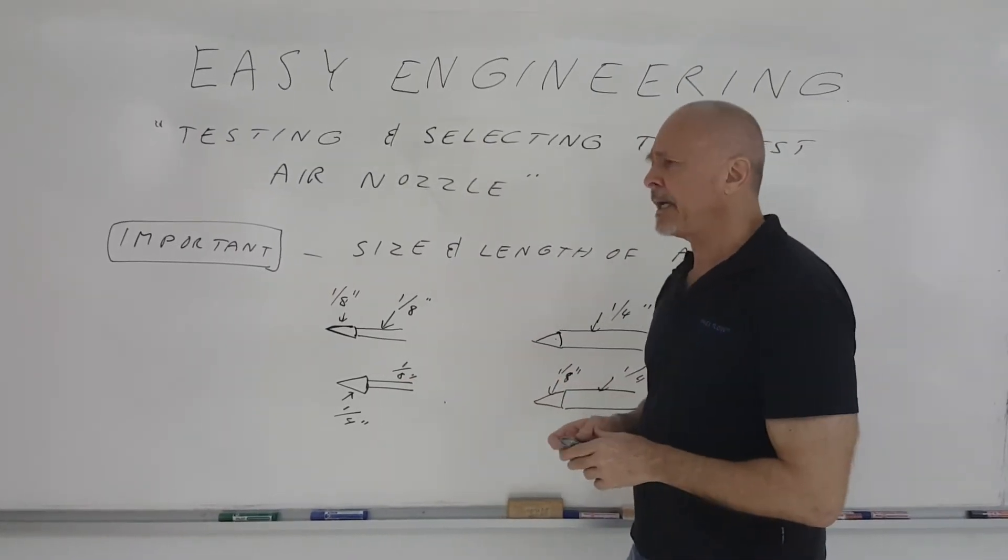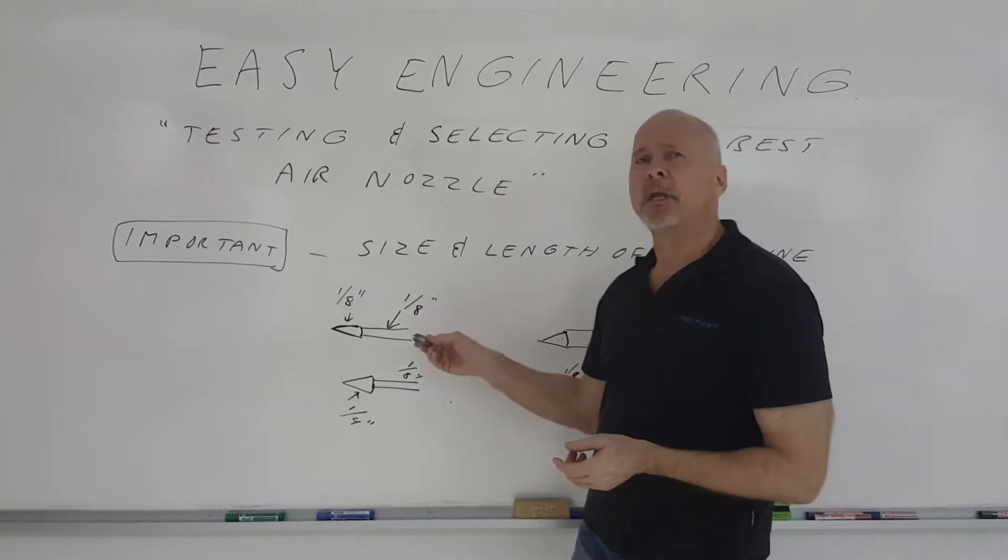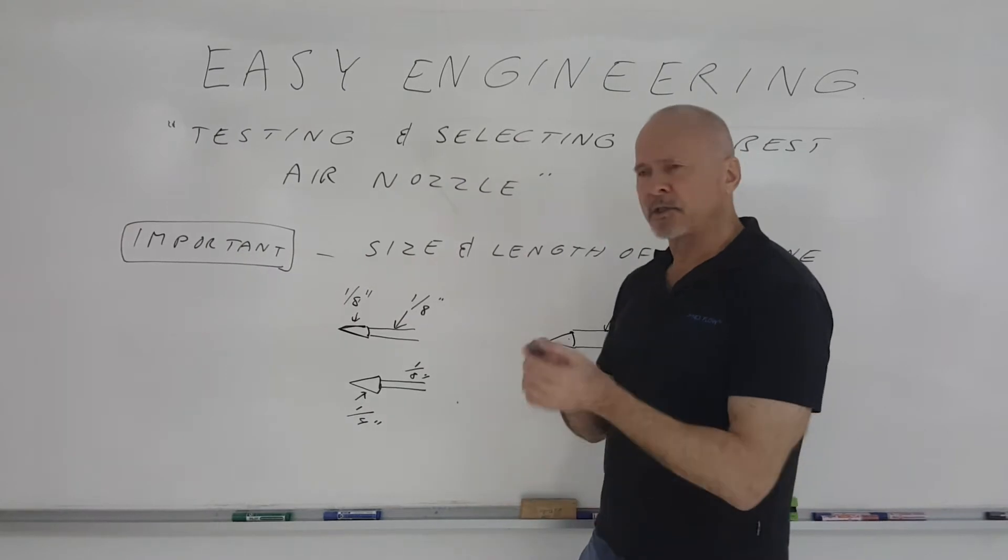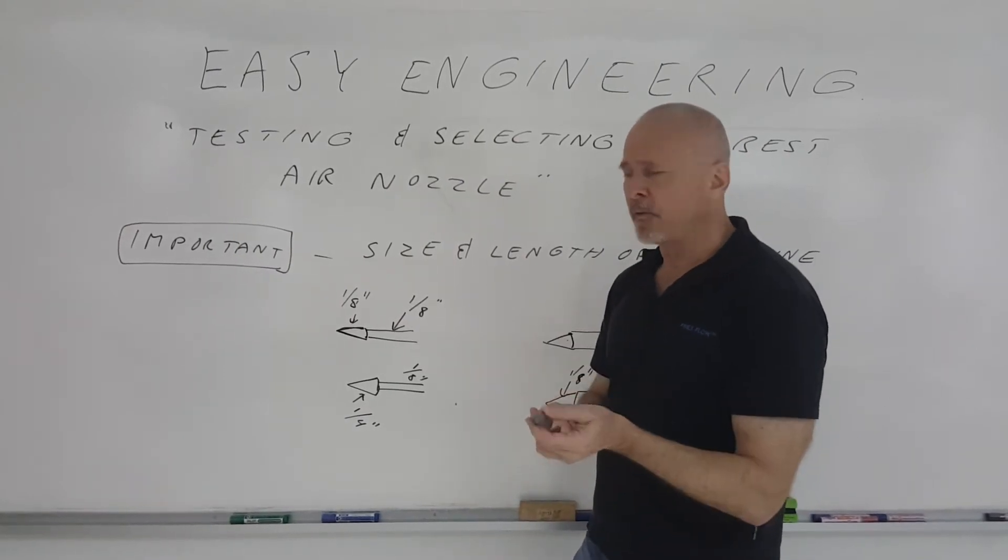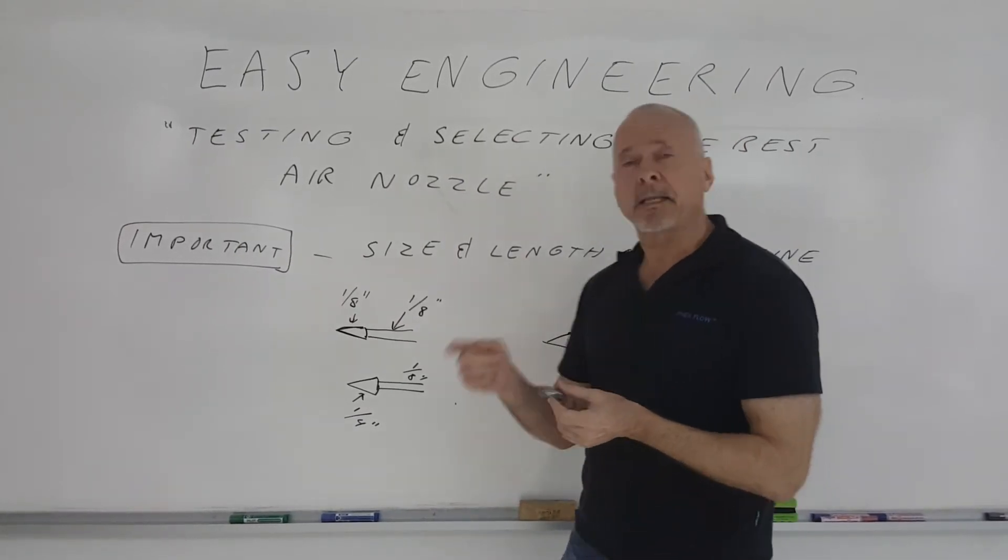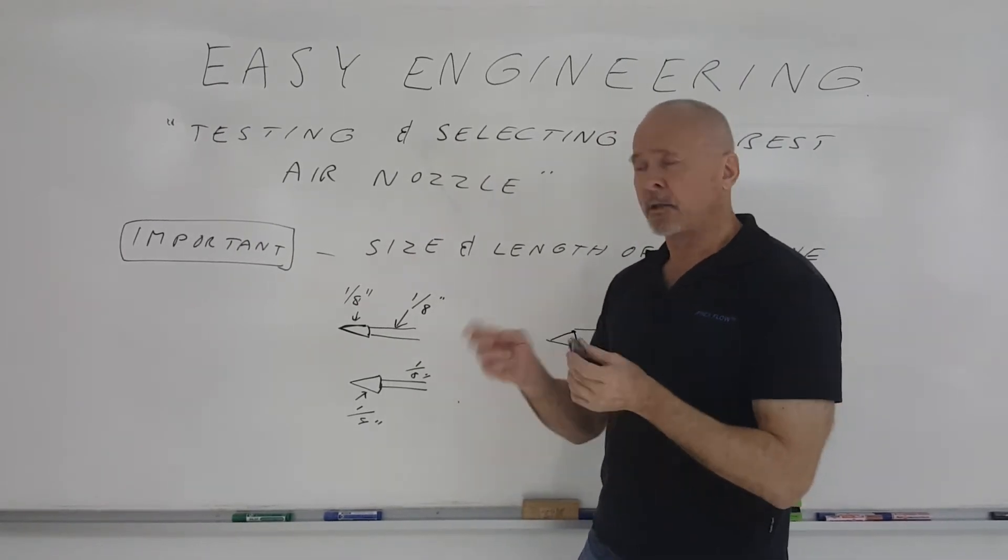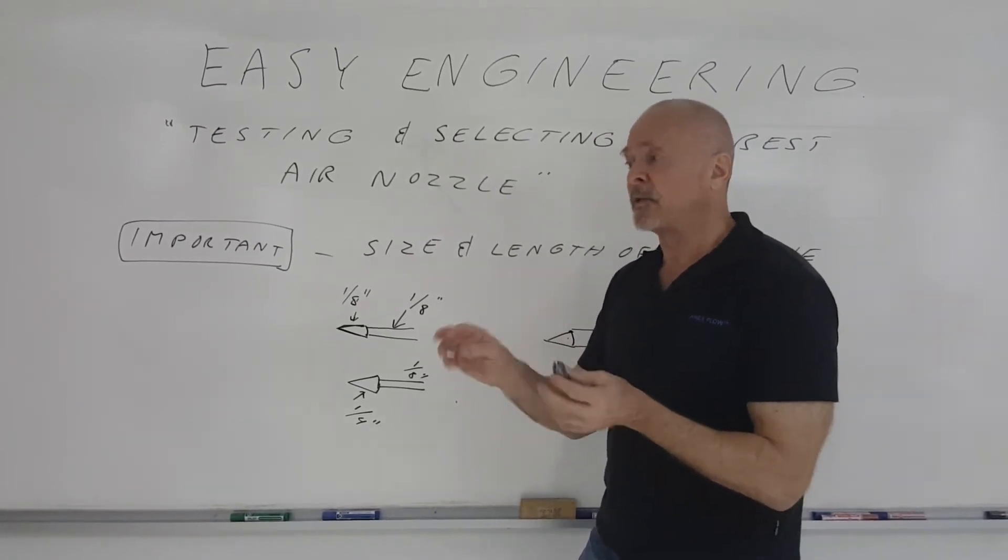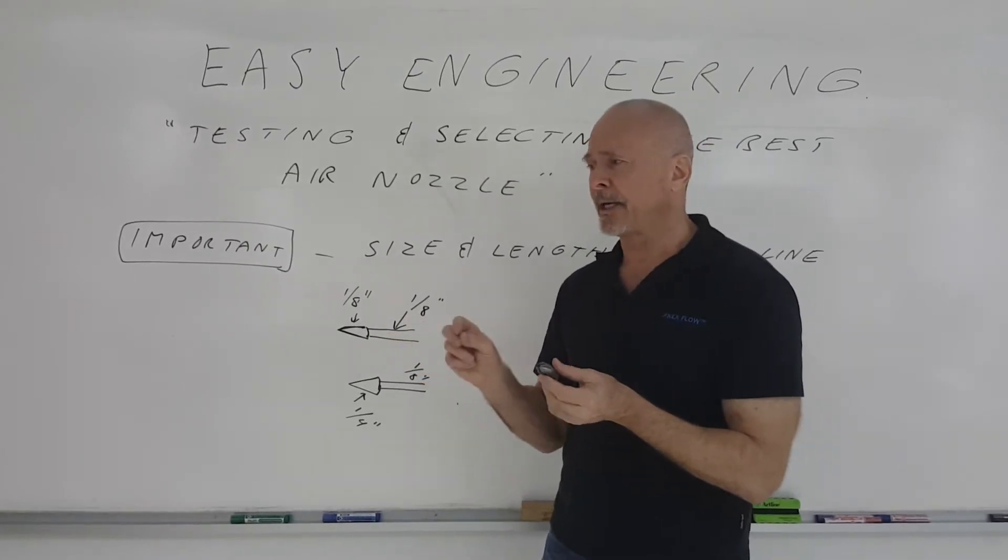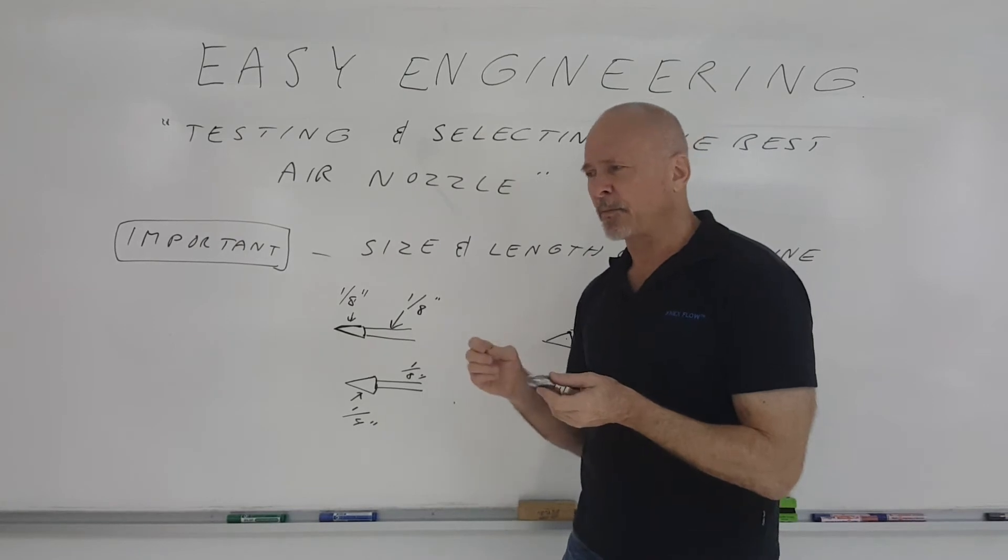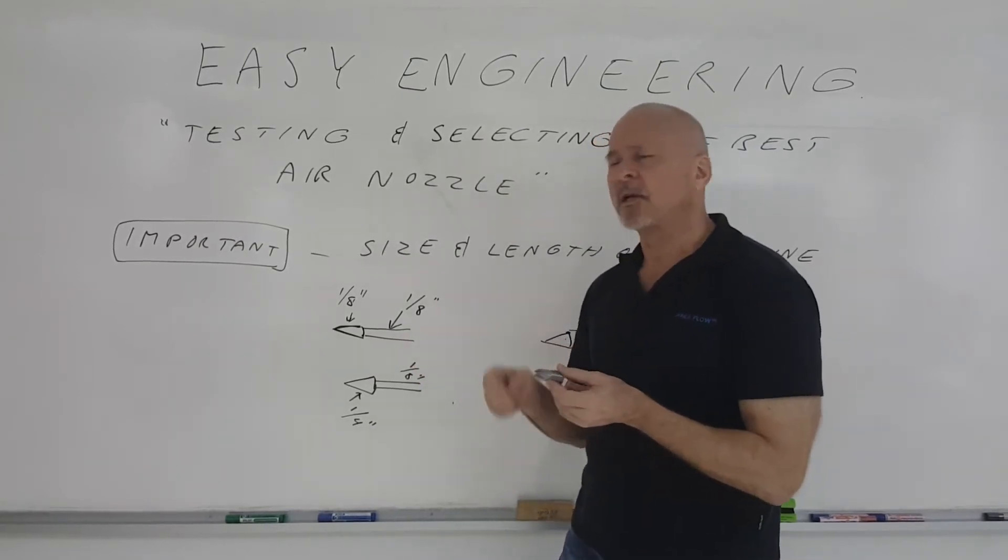Let's say you have a one-eighth inch line and you're looking through a list of nozzles. You see a quarter-inch nozzle that gives you a very high force, and you see a one-eighth inch nozzle that gives you a lower force. The one-eighth inch NPT or BSP inlet nozzle is going to use probably a lot less flow, which means a lot less force.